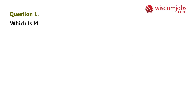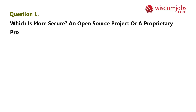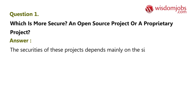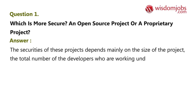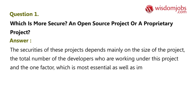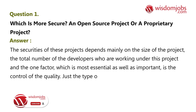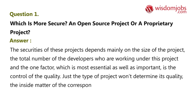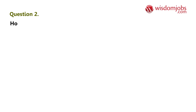Question one: which is more secure, an open source project or a proprietary project? Answer: the security of these projects depends mainly on the size of the project, the total number of developers working on it, and the most essential factor is the control of quality. The type of project won't determine its quality; the inside matter of the corresponding projects will matter.